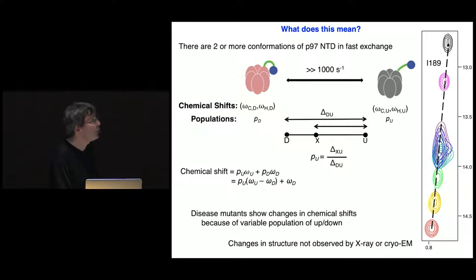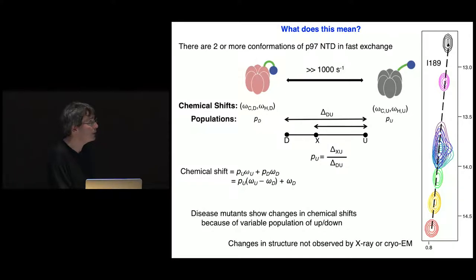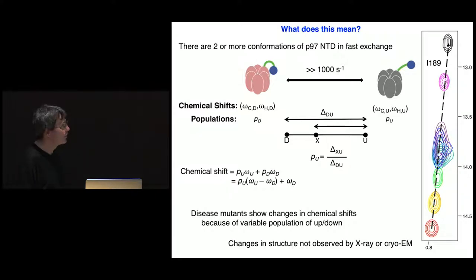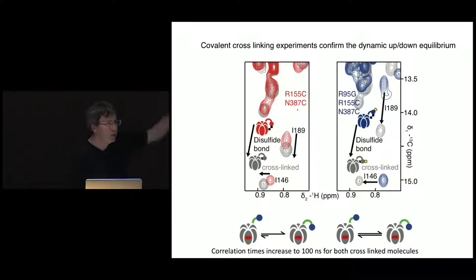I want you to consider P97 not as a static molecule — as typically depicted by cryo-EM or X-ray crystallography — but as a dynamic molecule that interconverts between two states: N-terminal domain down and N-terminal domain up. This is in the ADP state. We know this interconversion happens at a rate greater than 15,000 times per second because we've developed NMR experiments that allow us to measure that. If we could stop the rate and freeze the molecule, some molecules would be down and some up, and we'd get distinct peaks for each. With very rapid interconversion, we get one peak that is a population-weighted average of the two structures.